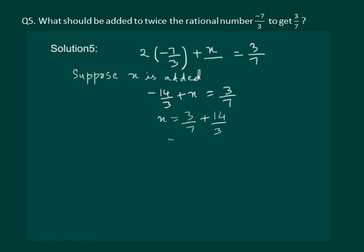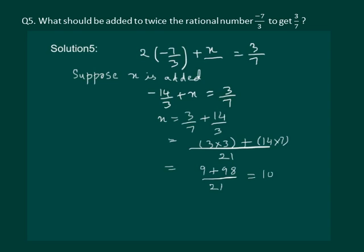Let us solve this further. We get 21 as LCM and the numerator becomes 3 into 3 plus 14 into 7. On solving, we get 9 plus 98 over 21, which is equal to 107 by 21. That means x is equal to 107 by 21.